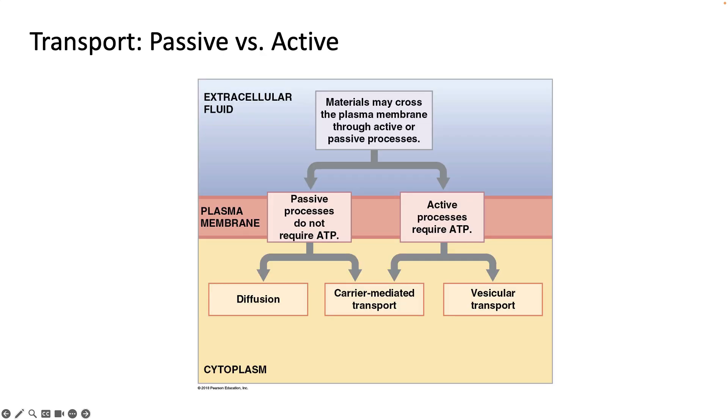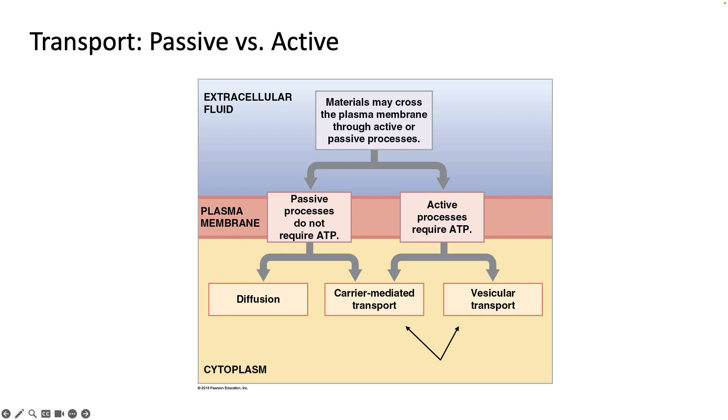In the transport across the membrane video, we covered passive transport, which includes both diffusion and carrier-mediated transport where materials are moving down their gradient, and active transport where materials are moving up the gradient. We had just introduced the concept of osmosis.